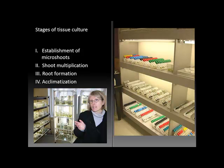Root formation can occur either in vitro in the test tube or ex vitro. Now it's time for auxins — the hormone known as auxin — to be increased and the cytokinin level to be reduced. We used those auxins when we did cuttings, and frequently these shoots are subjected to a quick dip or rinse with auxin and then allowed to develop roots.